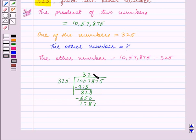325 times 5 is equal to 1625. Subtracting we get 162. We bring down 5 now.